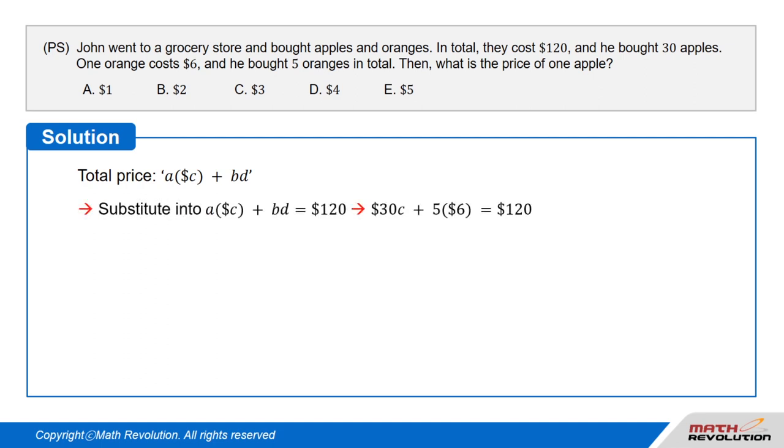Substituting in the values we know, we get 30 times C plus 5 times 6 dollars equal to $120, which simplifies to 30C plus 30 equal to 120.